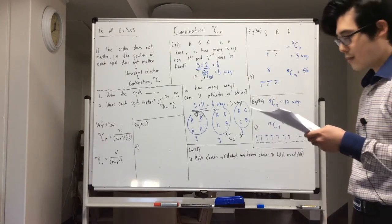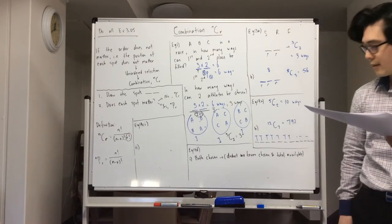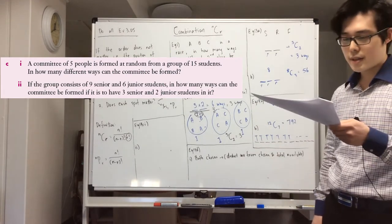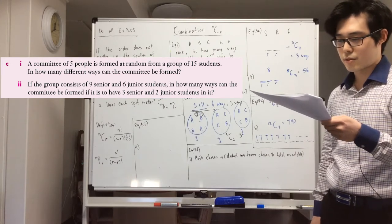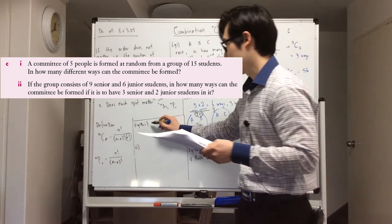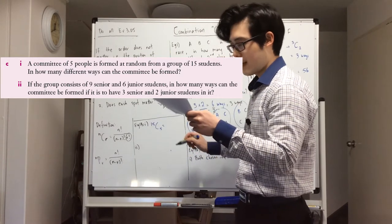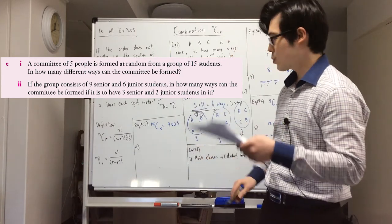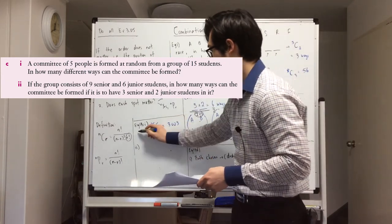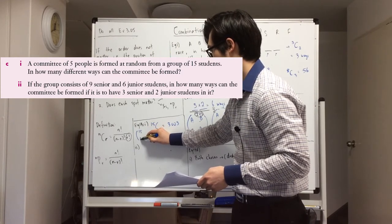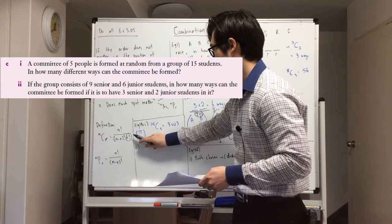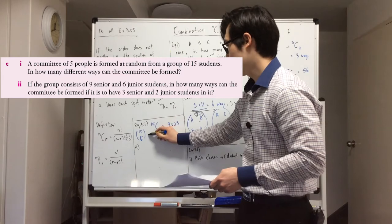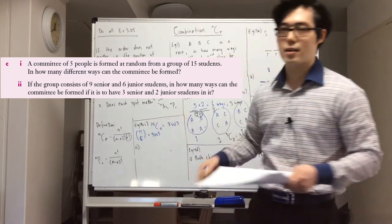Example 14C: a committee of five people is chosen at random from a group of 15. In how many ways can the committee be formed? When you see the word 'committee', you know it's combination — that's just 15C5, which equals 3003. Another way of writing 15C5 is using bracket notation — some books use that, some books use this notation. Just know they mean the same thing.